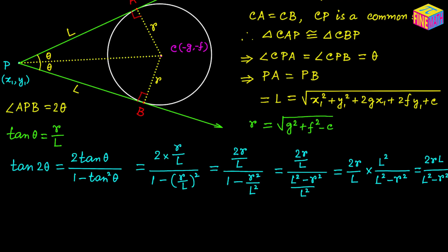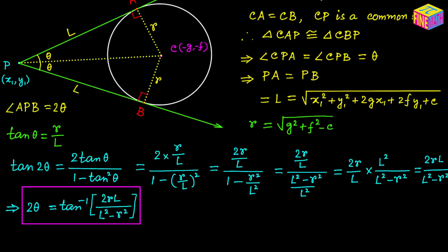Therefore, the angle 2 theta equals tangent inverse of 2RL over L² minus R². Both L and R are known from the given equation of the circle and the coordinates of the external point P. We can easily calculate L and R, plug them in, and compute 2 theta. That is our formula. Next, we are going to take an example.